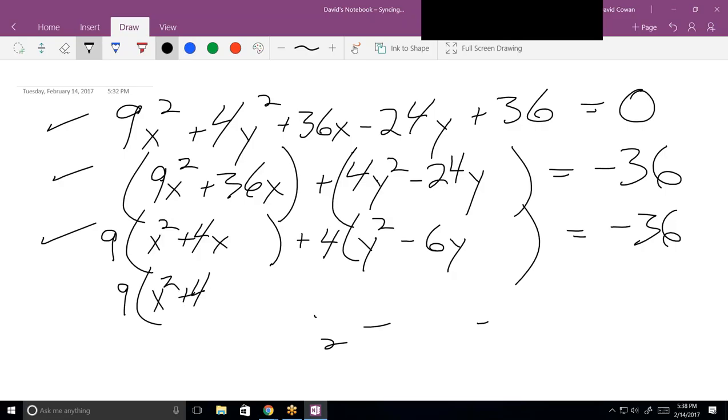So now how do you complete the square? Half of the coefficient squared, so X squared plus 4X plus 4. How much did I just add to the left side when I put a 4 in there? That's messing with the equation. I've changed the left side by how much? 36. So I have to add 36 over here to balance that out.